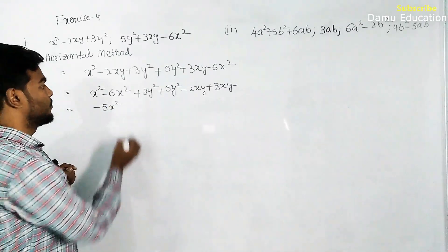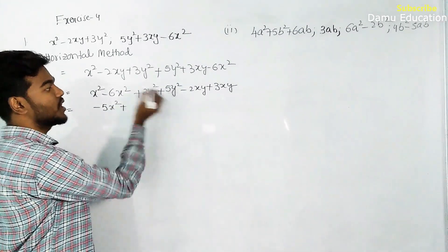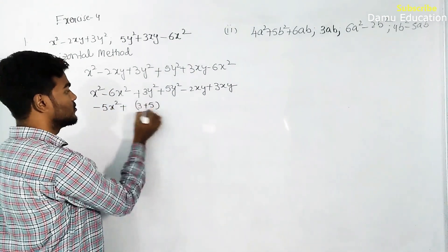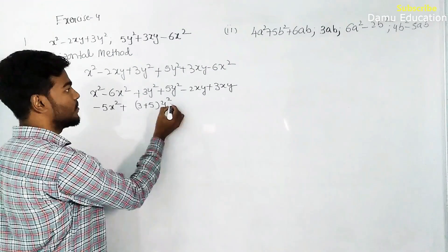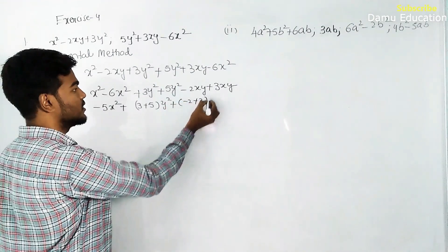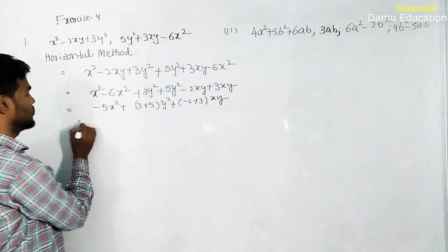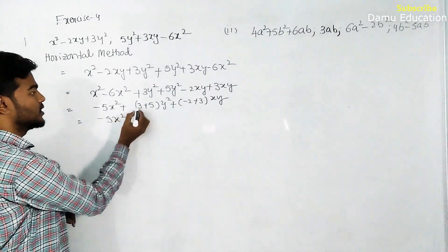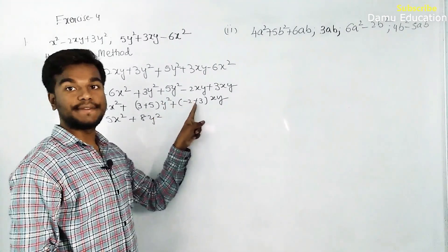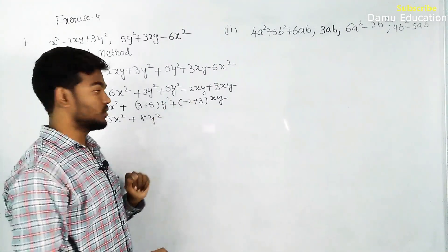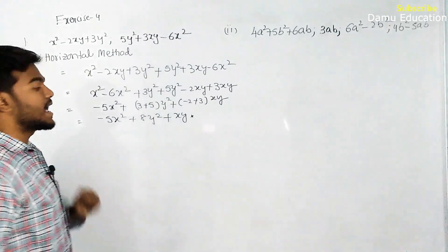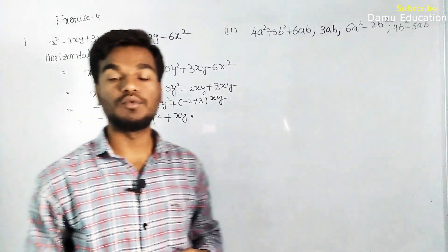So 1x² minus 6x² gives minus 5x². Then 3y² plus 5y² gives 8y². Then minus 2 plus 3 gives plus 1xy. So the horizontal method answer is minus 5x² plus 8y² plus xy.